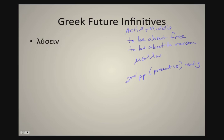So for luo, we're going to take our second principal part, or stem plus sigma, and add ain: lusain. This would be active. And in the middle, same stem, but esthi: lusesthi.